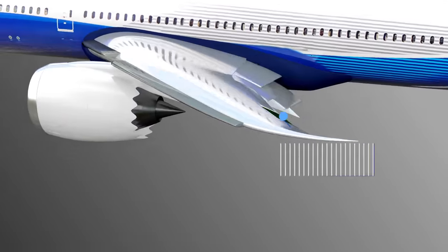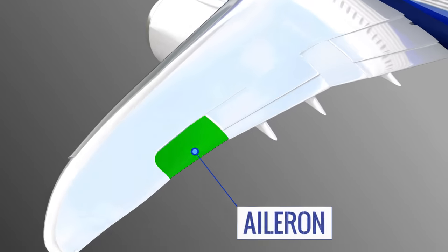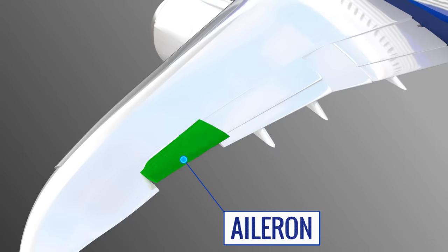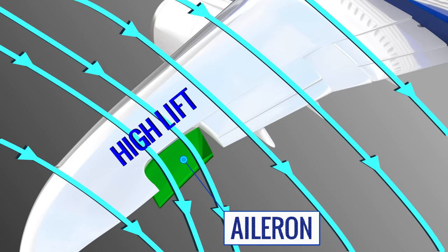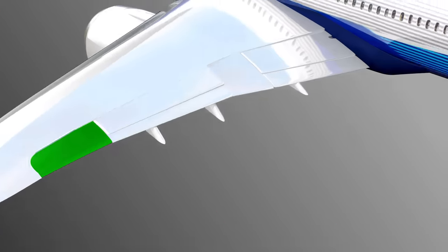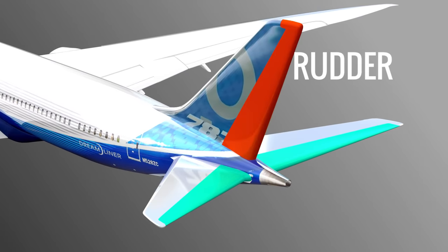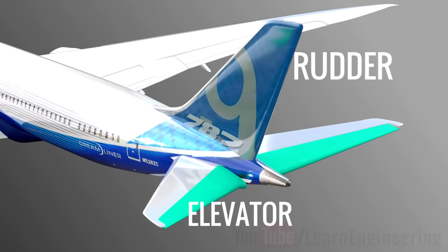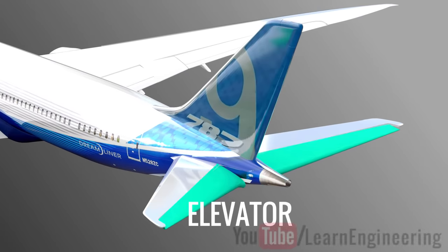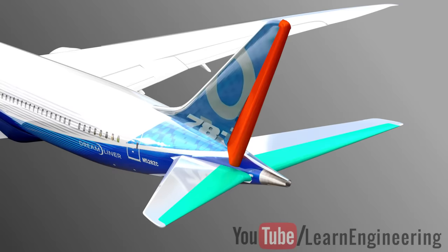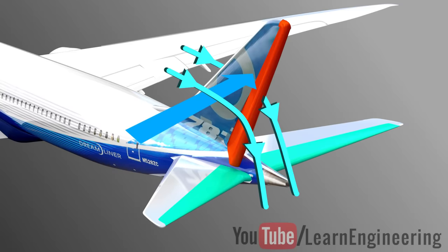The ailerons can move up and down, and for that reason the lift force can decrease and increase respectively. At the tail of the airplane, you can see two attachments: the rudder and the elevators. By adjusting the elevators, you can control the vertical force on the tail. By adjusting the rudder, you can control the horizontal force.